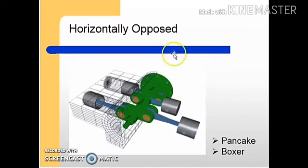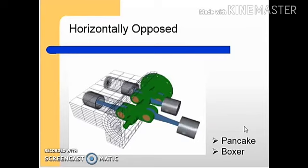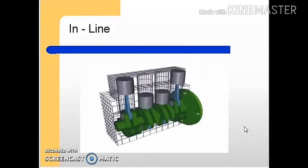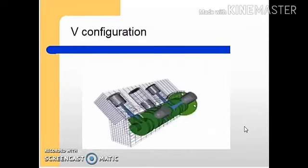Horizontally opposite engines come in two types: the pancake type and the boxer type. This is the inline cylinder type, and this is the V-type cylinder arrangement.